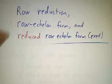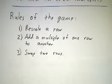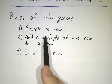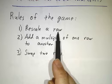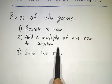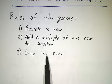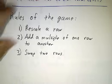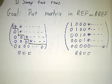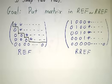The rules of the game are that if somebody gives you a matrix, a row operation is something you can do where you rescale a row — that is, multiply a row by any non-zero constant — or you can add a multiple of one row to another row, or you can swap two rows. These are called row operations. The goal is to apply a bunch of row operations until the matrix becomes in row echelon form or reduced row echelon form.